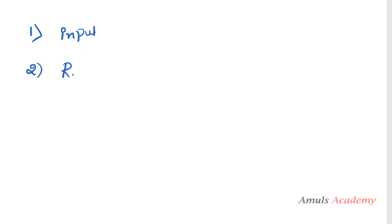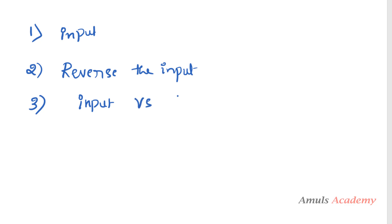So how do we write the program for this? To write the program we need to follow three steps. First, we take the input from the user. Second, after taking the input we reverse it. Third, we compare the input and the reversed input. If both are the same then the entered string or number is a palindrome; if not, it is not a palindrome.